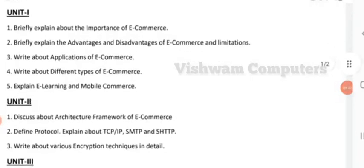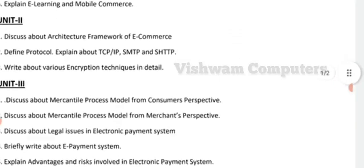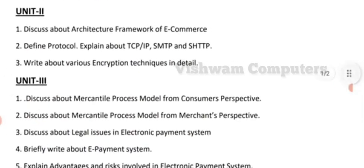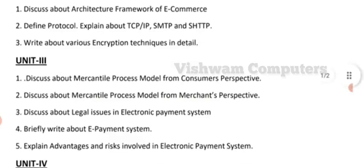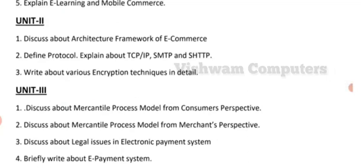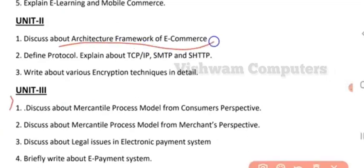In the second unit, there are three more important questions. The first question is: discuss about the architectural framework of e-commerce — the parts of the architectural framework that you need to discuss. The framework will consist of functionalities like application services, brokerage and services, interfaces, support layers, middleware services, network infrastructure, secure messaging, and structured documents. Explain them in brief to get good marks.